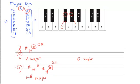Since B major doesn't have a flat in its name and isn't F or C, we know it's a sharp key. We use the sharp rule but in the opposite direction: if given the key, we go down a semitone and one note name to find the last sharp in the key signature. In this example, going down one semitone from B gives us A sharp.